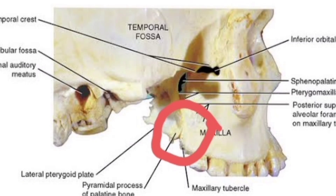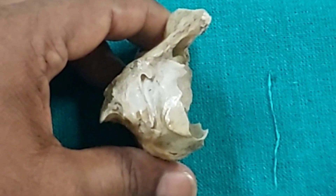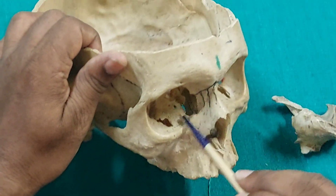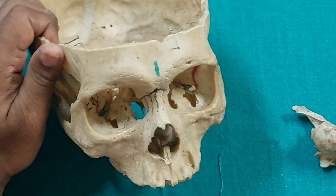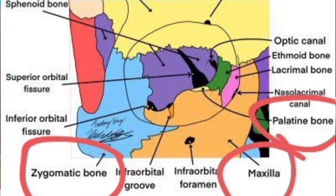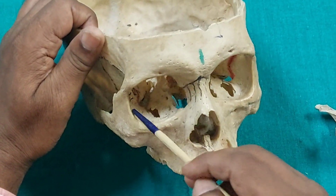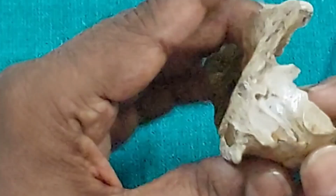The superior (orbital) surface forms the floor of the orbit. The floor of the orbit is formed by three bones: the orbital surface of the body of the maxilla, the orbital surface of the zygomatic bone, and the orbital process of the palatine bone.